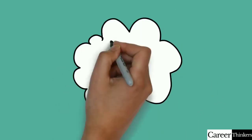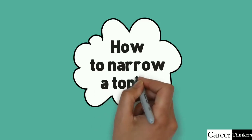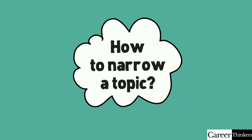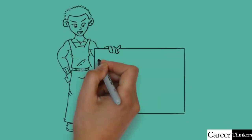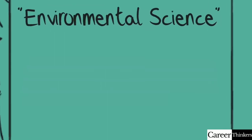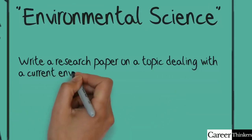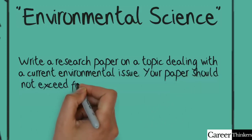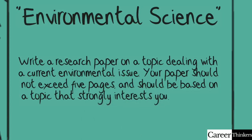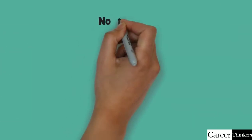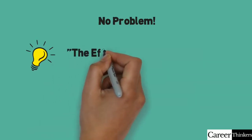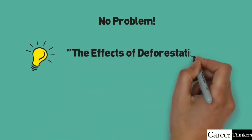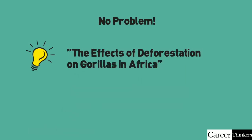Sometimes it can be really difficult to find a topic that is not too broad. Here are a couple of words of advice on what to do when your topic seems too broad. Let's say you are in an environmental science class and your teacher gives you this assignment prompt: write a research paper on a topic dealing with a current environmental issue. Your paper should not exceed five pages and should be based on a topic that strongly interests you. You might say, that's no problem — I saw a show the other day on TV and it talked about the effects of deforestation on gorillas in Africa. I think that's a great topic; it interests me and it's creative.